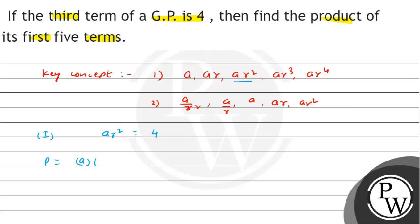Let us say P equals a into ar into a r square into a r cube into a r to the power 4. This gives us a to the power 5, r raised to the power 10. We can take this as a r square raised to the power 5, and a r square's value is 4, so 4 raised to the power 5, which gives us the value 1024.